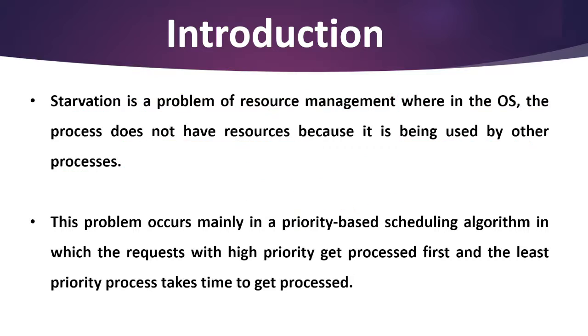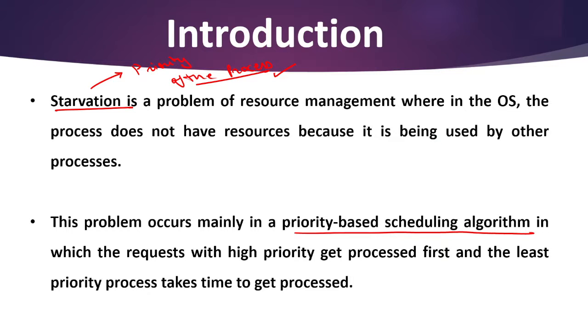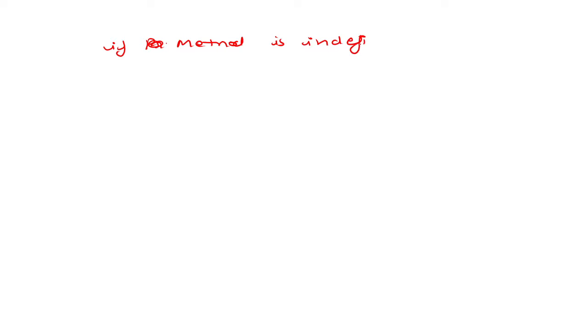This problem occurs mainly in priority-based scheduling algorithms. Remember: whenever we talk about starvation, we are directly or indirectly talking about the priority of processes. Starvation is always related to the priority of processes. In simple terms, starvation happens if a process or method is indefinitely delayed.